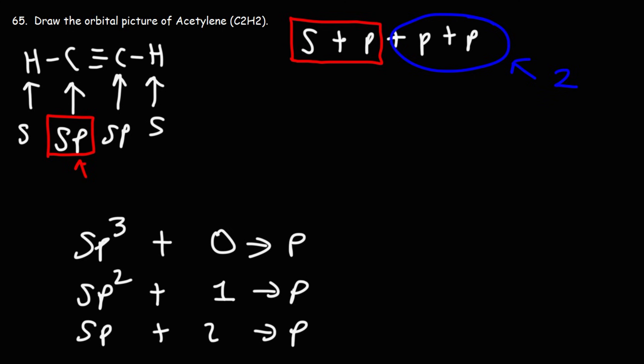That's how you can determine the number of empty p orbitals a carbon has. If the carbon is sp3 hybridized, it used up all of its p orbitals, so it doesn't have any empty p orbitals. If it's sp, it used up one out of its three p orbitals, so it has two left over.